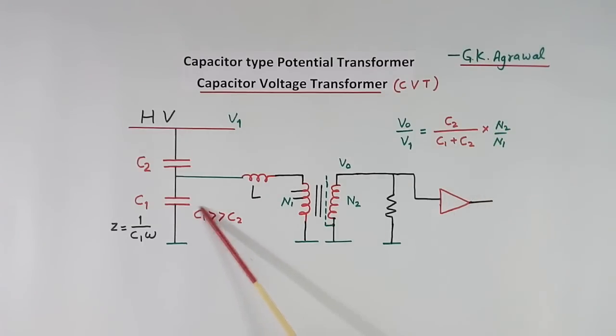Now because C1 is much more than C2, so this will be more, this will be less. So we get low voltage here.